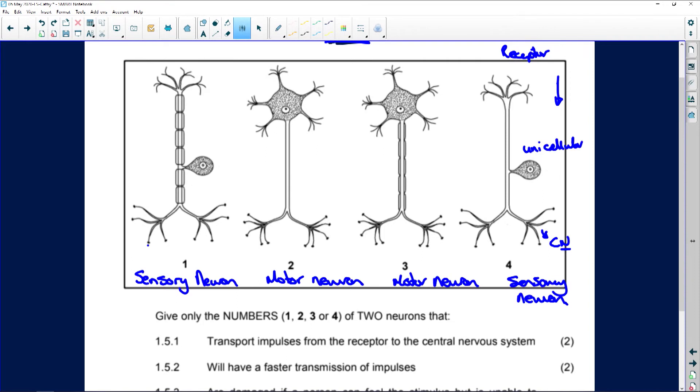Then here you've got your motor neuron. In the motor neuron, here are your dendrites. Okay, those are your dendrites there as well. Okay, this is multicellular.